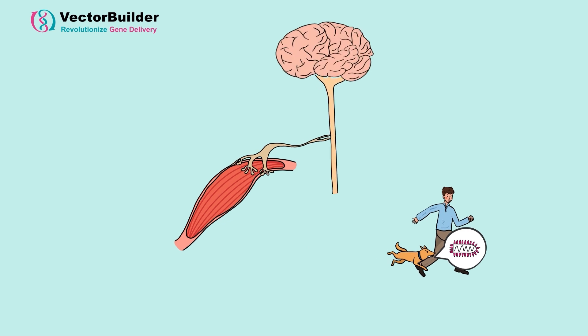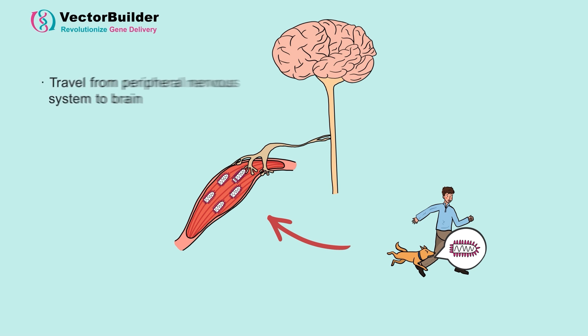Rabies-infected saliva is introduced in the bite, and the virus enters the new host's muscle. From here, the virus replicates and spreads to the innervating neuron, travels up the neuron to the spinal cord.